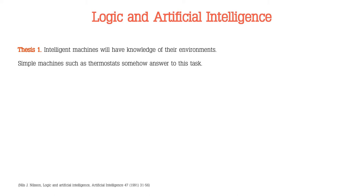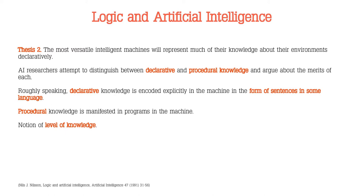There is a second thesis that Nielsen points out: the most versatile intelligent machine will represent much of their knowledge about their environment declaratively. This means that a real intelligent machine is able to acquire data and then finally represent, in a form of abstraction, the situation of the environment — the world, the universe — in a very precise and clear idea. It declares the state of the world. According with experts in this area of artificial intelligence, there are two forms of knowledge: declarative knowledge and procedural knowledge.